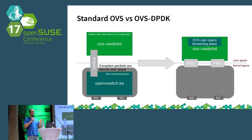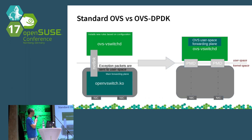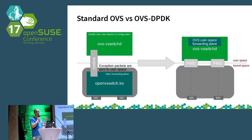There are two incarnations of OVS. On the left is the standard OVS version using the kernel, which has a kernel module called openvswitch.ko that communicates with user space through a netlink infrastructure. The data plane is handled in the kernel, and any exceptions — flows that are not learned or configured — cause packets to be sent to user space where a daemon handles them for configuration or discard.